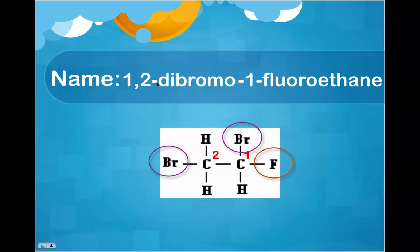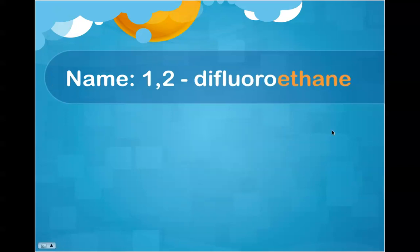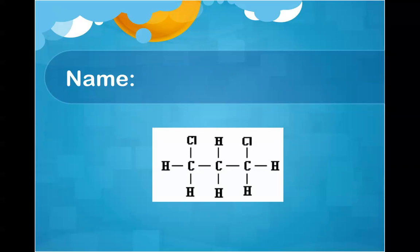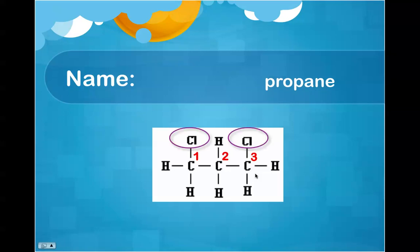1,2-difluoroethane: start with ethane — two carbons — then add the two fluorines on two separate carbons and correctly fill in the rest of the hydrogens. Finally, writing the name for the last structure: I have three carbons in the chain, giving me propane. I have two chlorines, so I have a dichloro, and they are on the first and third carbons. So: 1,3-dichloropropane.